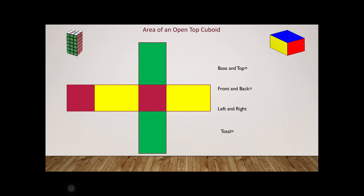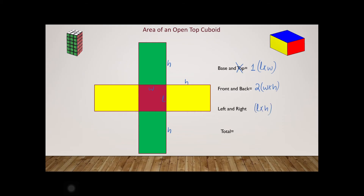As we saw earlier, we may not always have a solid cuboid — it can be open from the top as well. In that case the top is no more with us, however the base is still intact. So length × width is still considered for the base (just one face), the front and back faces are still there giving 2wh, and the left and right faces give 2lh. So the total surface area of an open top cuboid is lw + 2wh + 2lh.